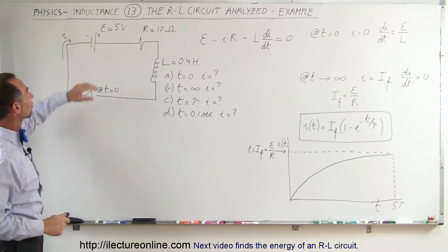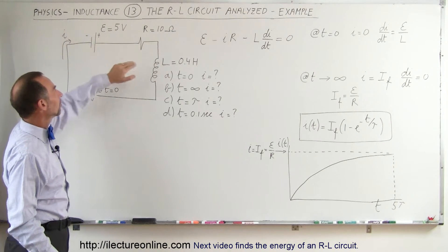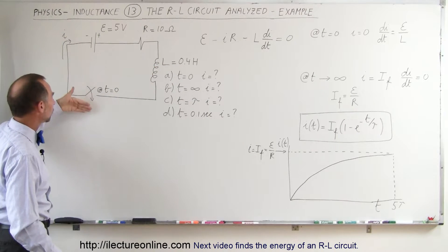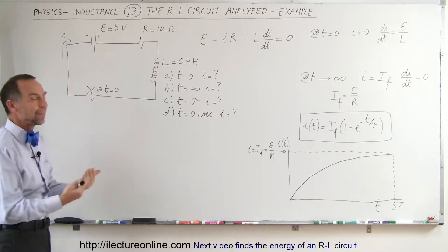We're going to put some real values in there. Let's say we have a battery of 5 volts, a resistor of 10 ohms and an inductor of 0.4 henrys. We close the switch at t equals 0. What will happen afterwards?